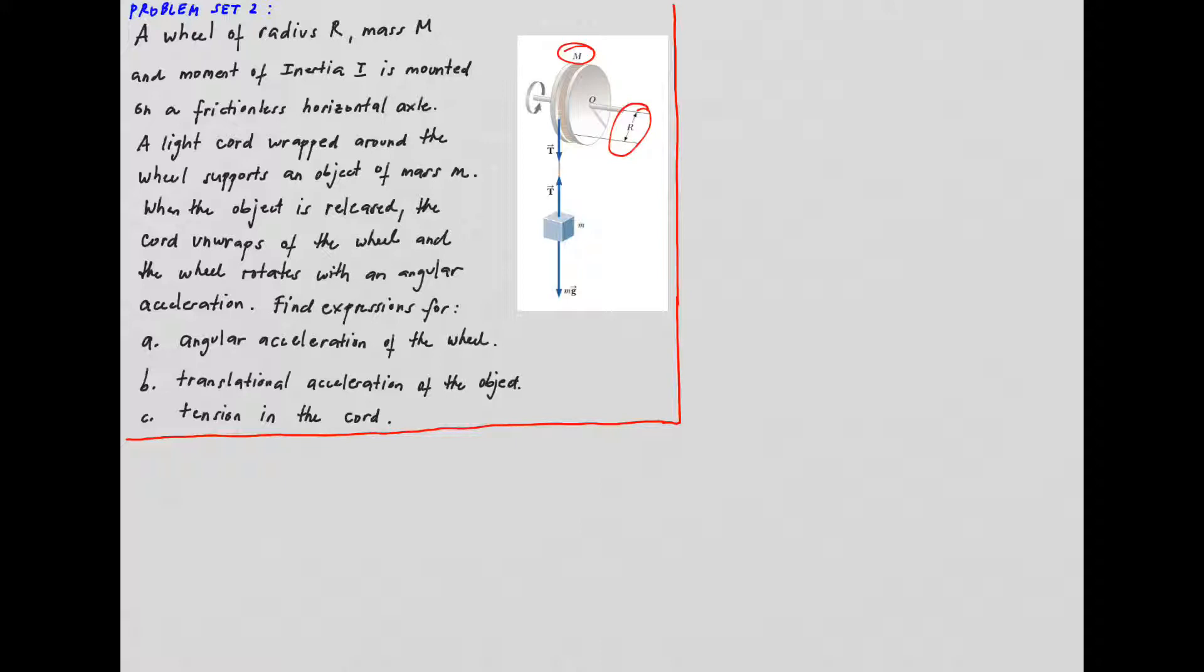So we will represent the moment of inertia as I is mounted on a frictionless horizontal axle. A light cord wraps around the wheel and supports an object of mass M. When the object is released, the cord unwraps from the wheel and the wheel rotates with an angular acceleration.